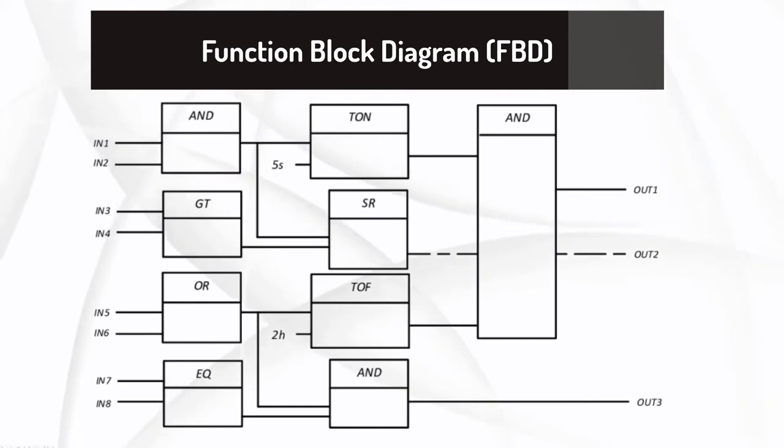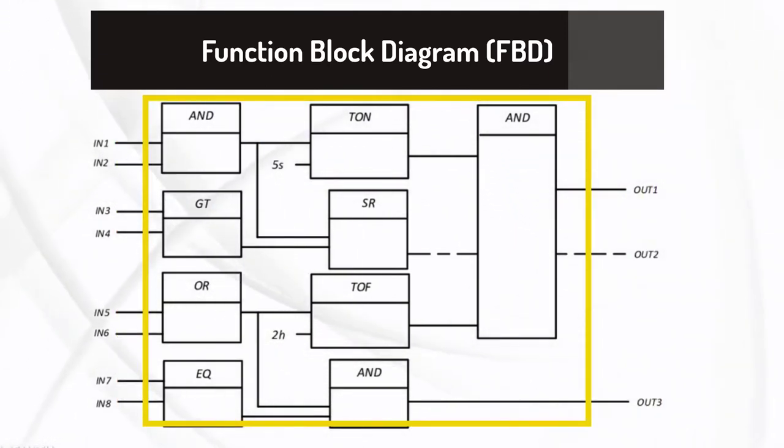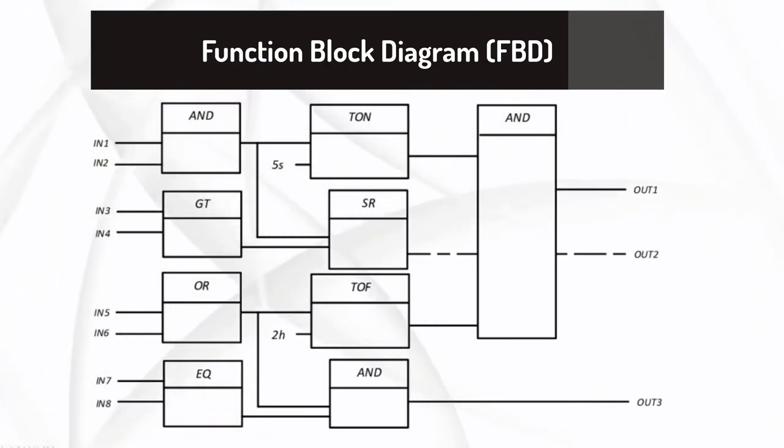3. Function Block Diagram, FBD. The function block diagram is also a graphical type of language. The function block diagram describes a function between inputs and outputs that are connected in blocks by connection lines. Because SFCs are graphical programming environments, it makes other tasks surrounding PLC programming that much easier and even more intuitive. For instance, tasks such as initial design, debugging, and troubleshooting of the program itself.